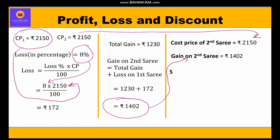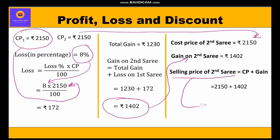The cost price of the second sari is rupees 2150 and the gain on it is rupees 1402. So selling price of the second sari equals cost price plus gain = 2150 + 1402 = rupees 3552. This is how we have solved this question. Thank you.